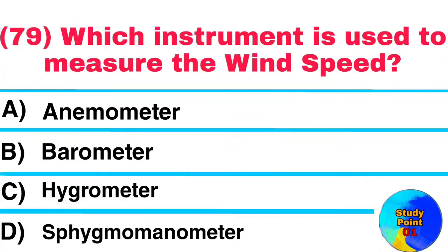Question No. 79. Which instrument is used to measure the wind speed? Answer: Anemometer.